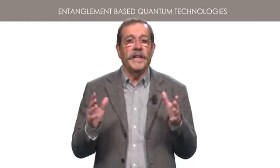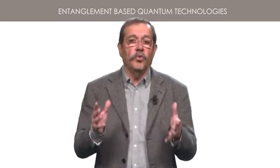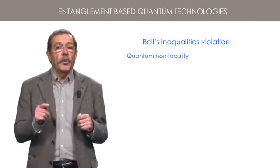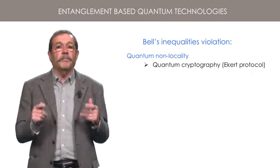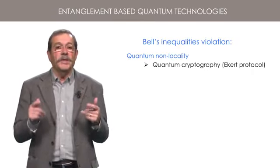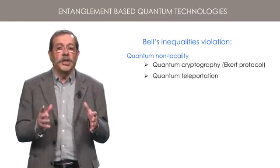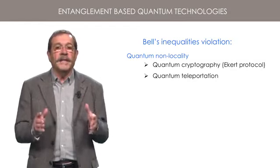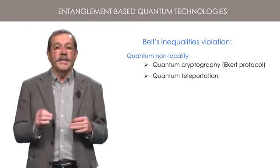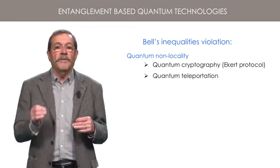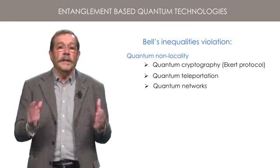This leads to applications in quantum communication, of which you will see two. The first one is the Eckert protocol for a secure distribution of cryptographic keys to two distant partners. The other one is quantum teleportation, which permits quantum state transfer to a distant partner. These technologies are essential to the development of quantum networks, the so-called quantum internet.